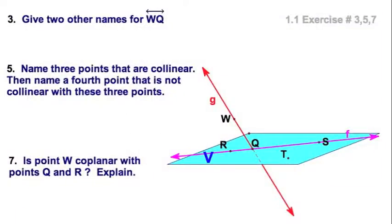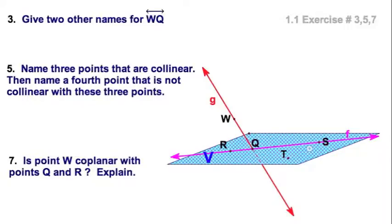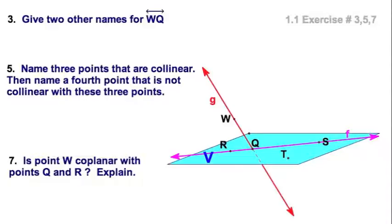In this diagram, we have a plane which is named V, notice the capital V, and we have a line laying in the plane, the magenta line, and we have this red line which appears to intersect the plane. So let's answer the three relevant questions. Two other names for the line WQ. Well, you can just reverse the letters, QW. But also, we do have a lowercase g, and it is okay to name a line with a single lowercase letter.